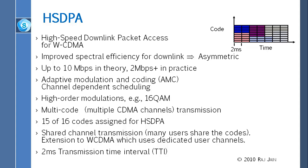HSDPA — High Speed Downlink Packet Access — was the first 3.5G enhancement. Before HSDPA, data rates were very poor. They started by fixing the downlink first because it is easier: there is only one transmitter at the base station with abundant power, whereas uplink has many low-power transmitters in users' hands with collision issues. The downlink is the link from the base station down to the user.